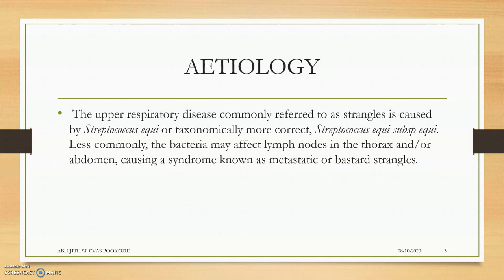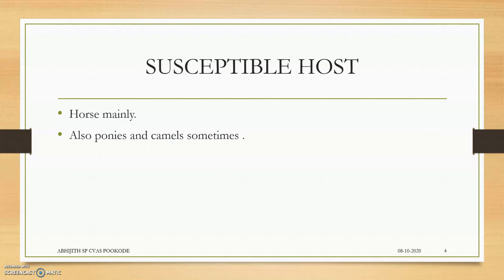The etiological agent is Streptococcus equi — Streptococcus bacteria, equi species and subspecies equi. Less commonly, the bacteria may affect lymph nodes in the thorax and abdomen, causing a syndrome known as metastatic or bastard strangles.